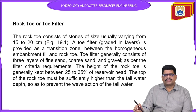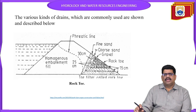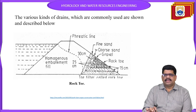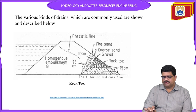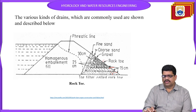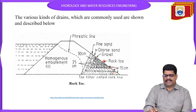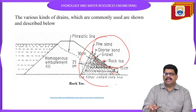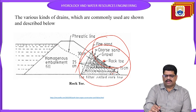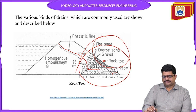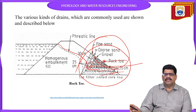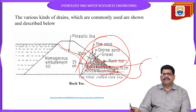Rock toe or toe filters: layers are provided at the toe. The layers are: fine sand, coarse sand, gravel, and rock. A first layer of 15 centimeters thickness can be provided, then the rock toe, and then gravel and coarse sand layers. Different layers are provided at the toe as filters. Water which comes from the seepage line is filtered through these layers and comes out through the drains.